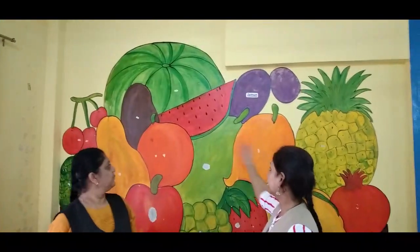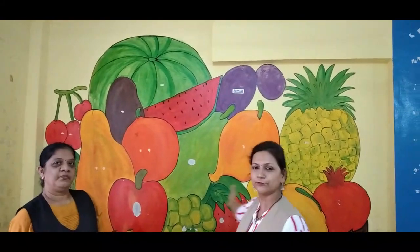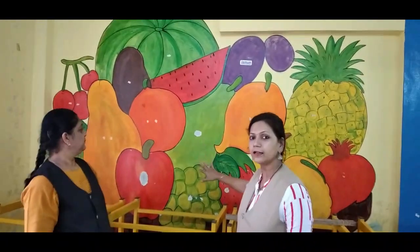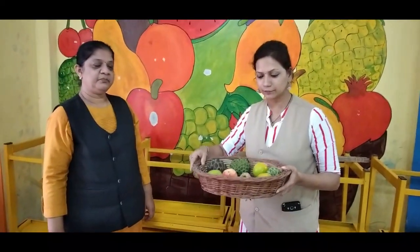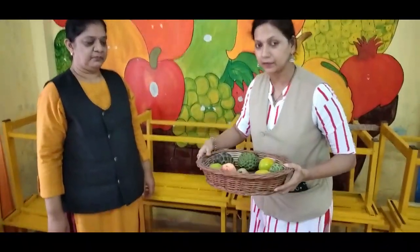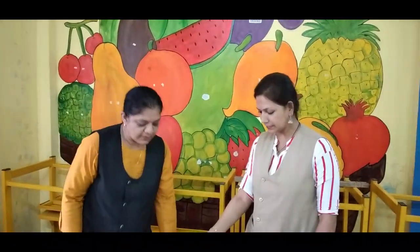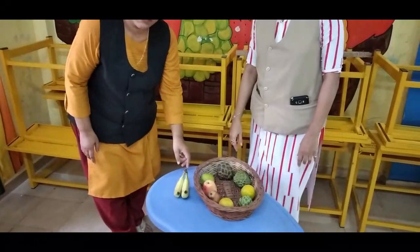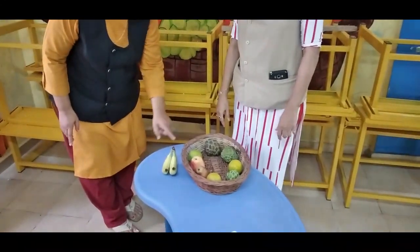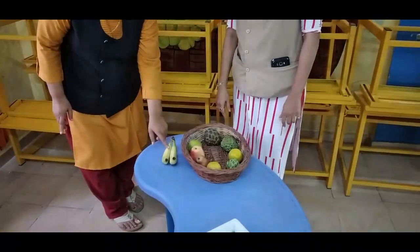Now, next example. We have some fruits and we are going to show you the position of fruits. You can see a big basket full of fruits. Where are the fruits? They are in the basket. Now, where are the bananas? Bananas are outside the basket. Understood?